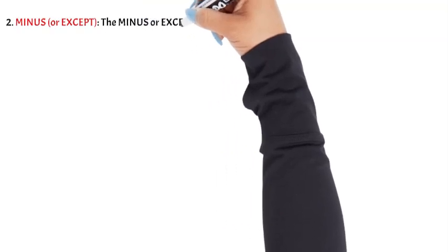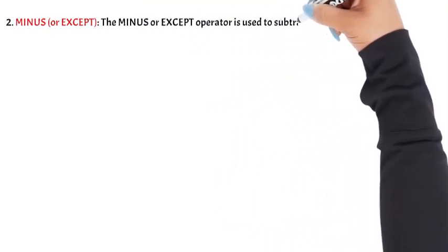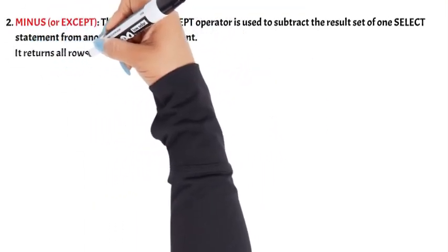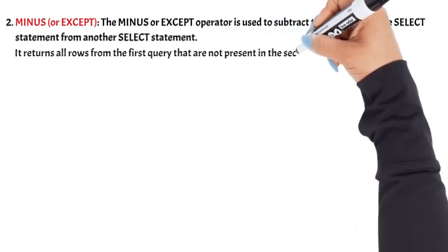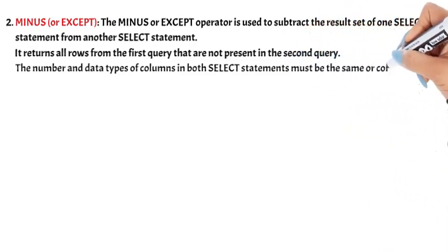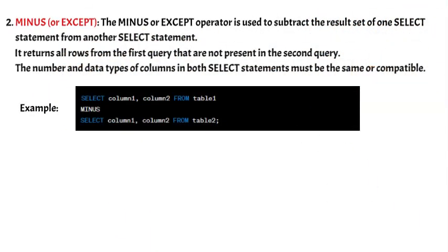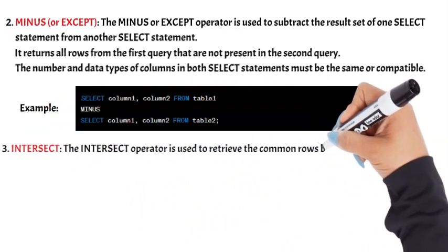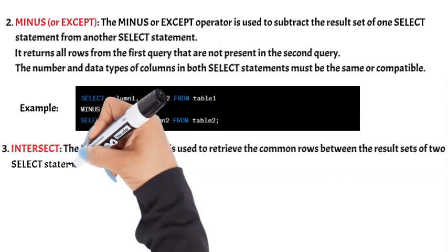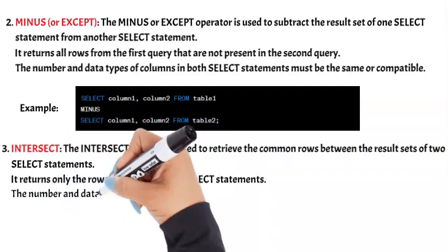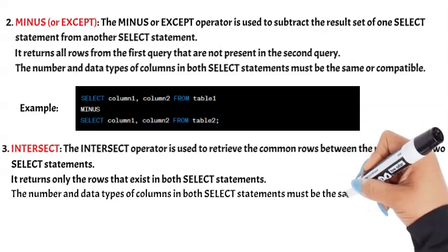2. Minus or Except. The Minus or Except operator is used to subtract the result set of one select statement from another. It returns all rows from the first query that are not present in the second query. The number and data types of columns in both select statements must be the same or compatible. 3. Intersect. The Intersect operator is used to retrieve the common rows between the result sets of two select statements, returning only the rows that exist in both. The number and data types of columns in both select statements must be the same or compatible.